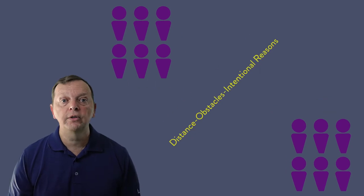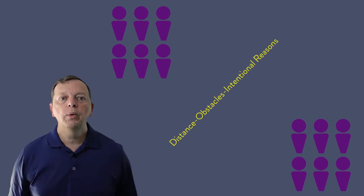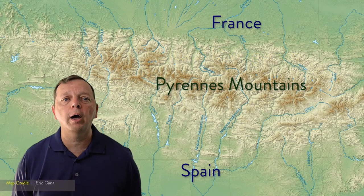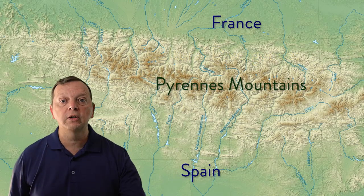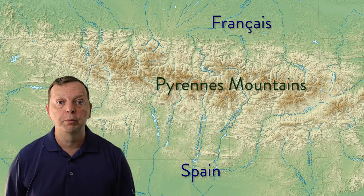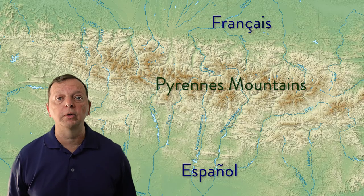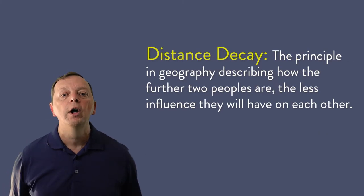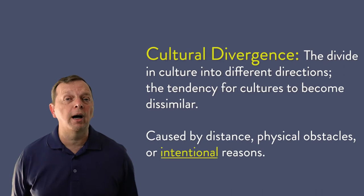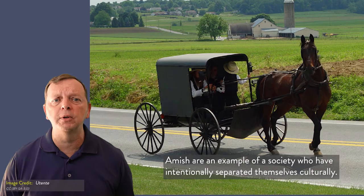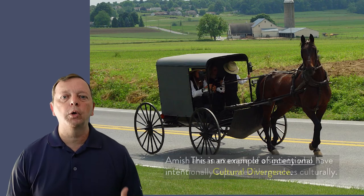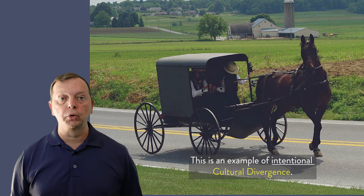But just as cultures can come together through cultural convergence, societies can be separated from each other — either through distance, physical geography, or from their own choice. When this happens, the cultures of the societies will become more different. We call this cultural divergence. For example, between Spain and France there is a mountain range called the Pyrenees, which separates their people. On one side people speak French, and on the other side people speak Spanish. Distance can also create cultural divergence — the further away two sets of people are, the less interaction there will be. We call this phenomenon distance decay, and it also creates cultural divergence. Cultural divergence may also be intentional. Take the Amish, who live in states such as Pennsylvania and Indiana. They've made a choice to live in their own communities, don't accept modern technology, and have evolved into a culture that is different from the rest of the United States. This is called intentional cultural divergence.